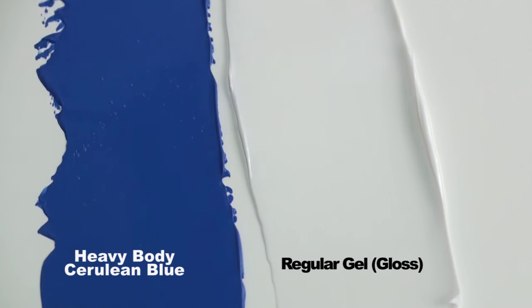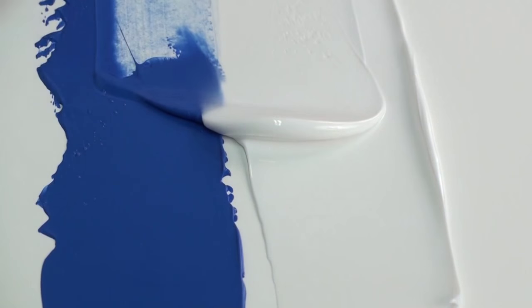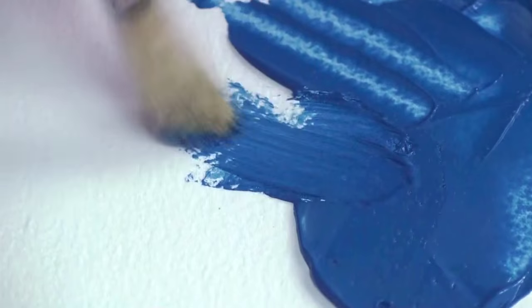All acrylic gels are basically the same as acrylic paint, although they lack the pigment that gives the paint its color. All gels are formulated to be compatible with acrylic paints and will provide the same durability and archival qualities as acrylic paints.